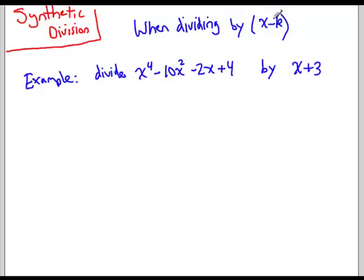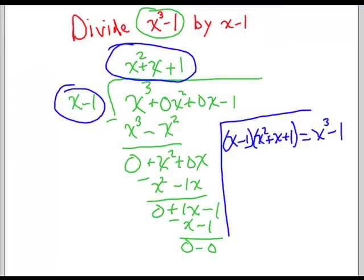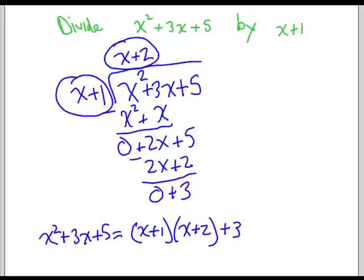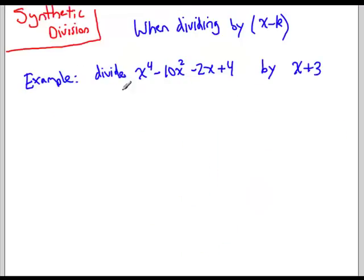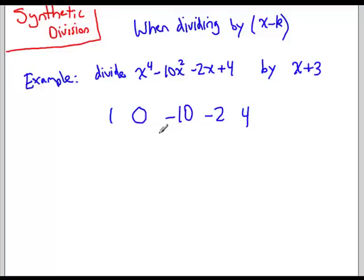Here's a little trick. When we're dividing by x minus k — which we've done in both cases, k being 1 and k being negative 1 — we look at these terms and just write the coefficients. Our x to the 4th term is 1, x to the 3rd term is 0 (it's not there), x squared term is negative 10, x term is negative 2, and the constant is 4. We're dividing by x plus 3, so our k is really negative 3.